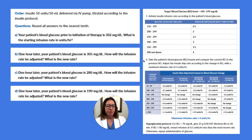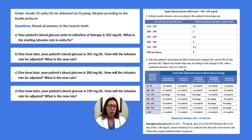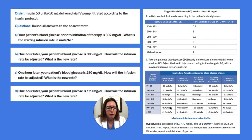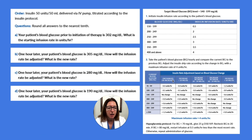Looking at step two of the protocol: take the patient's blood glucose hourly and compare the current blood glucose to the previous blood glucose. Adjust the insulin drip according to the change in blood glucose, with a maximum infusion rate of 4 units per hour. Our current blood glucose is 305, which falls within the appropriate range. Our blood glucose increased by 3, so we use the column for blood glucose that has not changed or has increased. For our patient, we will need to increase their rate by 0.9 units per hour, giving a new rate for Part B of 3.9 units per hour.